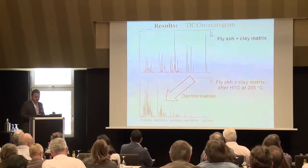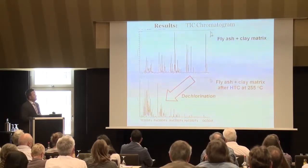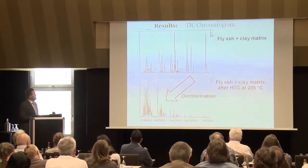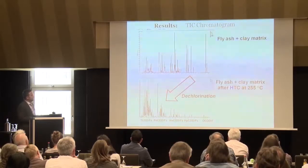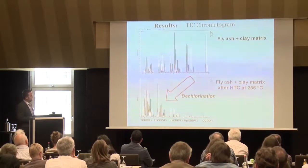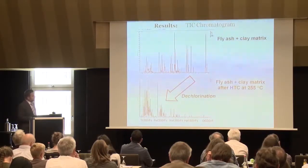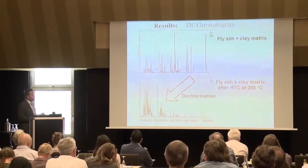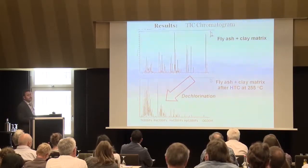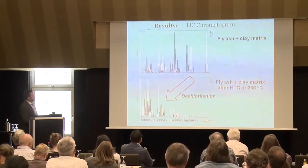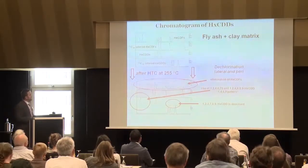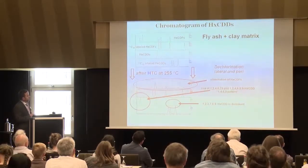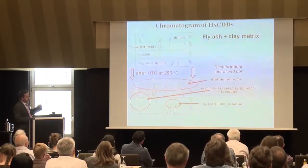What happens when we raise the temperature? The chlorination reaction starts. Looking at the typical dioxin pattern in a total ion current chromatogram — showing octadioxin, octafuran, and the hepta, hexa, penta, and tetra congeners — after applying the hydrothermal reaction, we see dechlorination at higher temperature: octadioxin and heptadioxins go down, and penta- and tetradioxins increase. Importantly, looking at the hexas, we also see nearly complete elimination of furans — the classical hexafuran pattern from fly ash disappears to just noise.